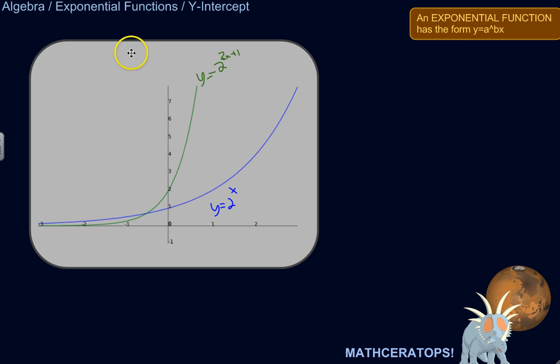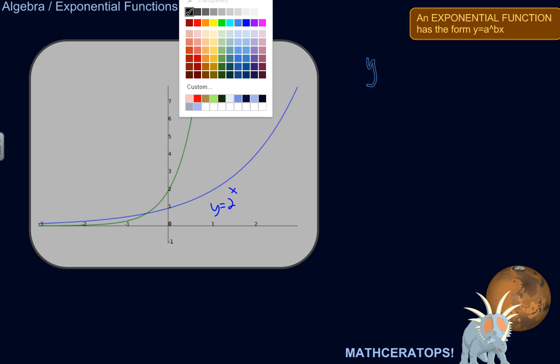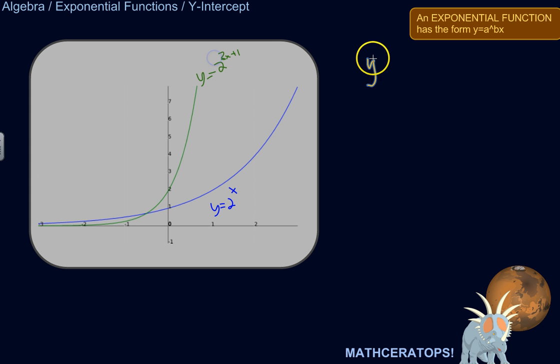You can see the y-intercept right there, but let me show you why that is true. Let's start with a simpler one: y equals 2 to the power of x.